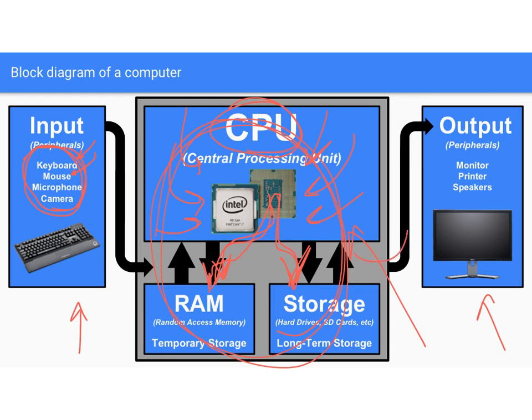Finally, we have some sort of output — whatever you typed in gets processed and shows up on the screen. Output data will be displayed on your monitor, printed to your printer or 3D printer, or played as sound on your speakers. Those are your output peripherals. A computer takes data as input, transforms it, and produces some sort of data as output.